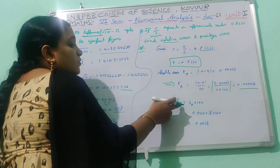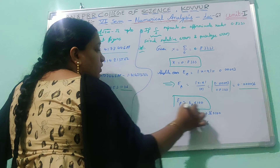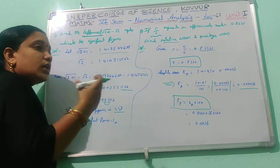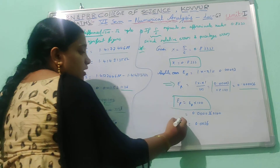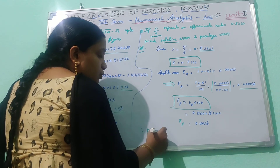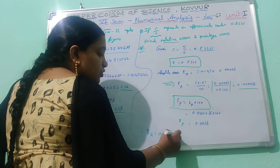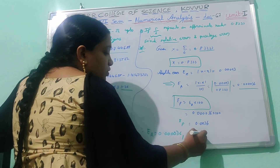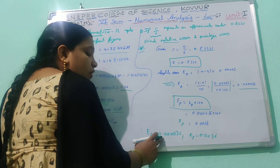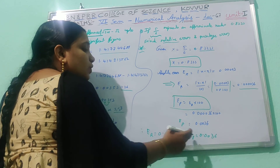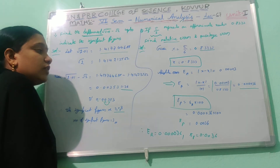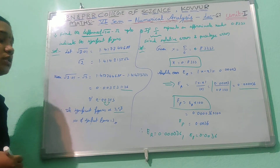Next, percentage error. Percentage error eₚ = relative error × 100 = 0.0000036 × 100. Therefore relative error eᵣ = 0.0000036, and percentage error eₚ = 0.00036. So next is the continuation of applications of errors.